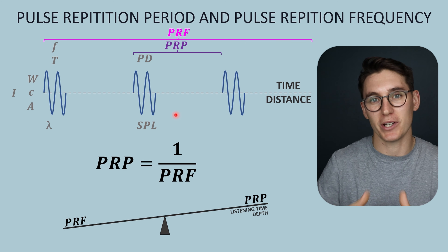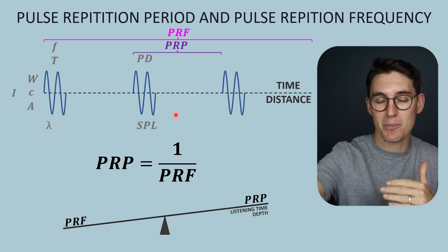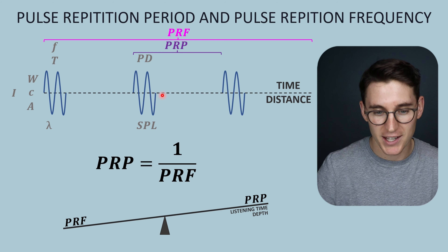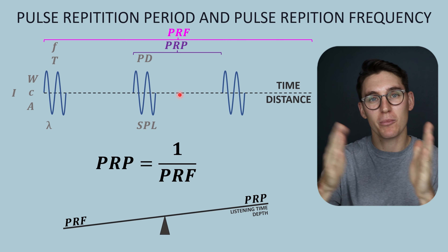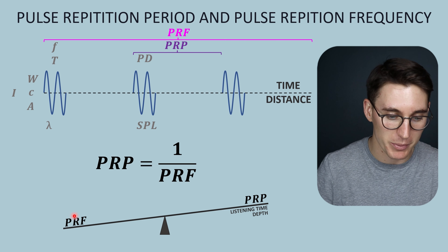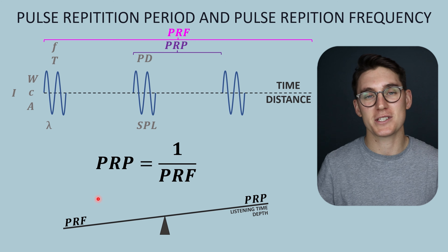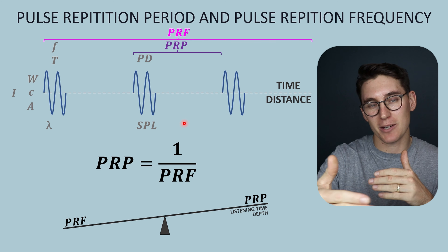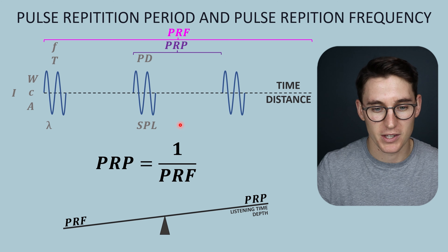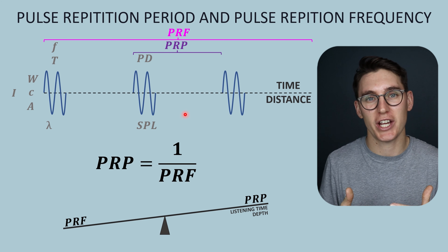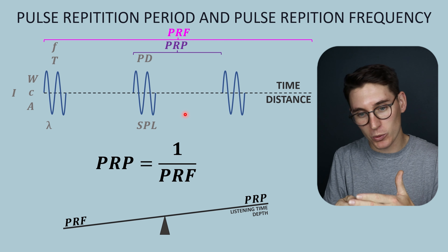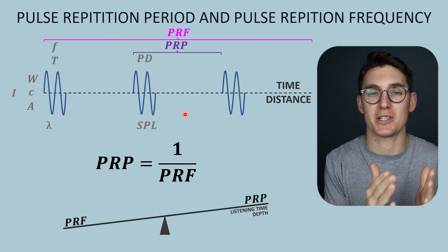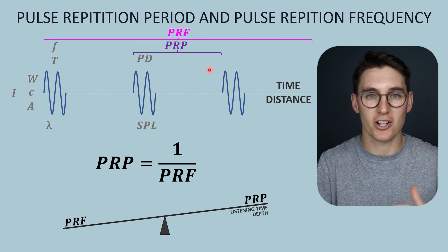Because we're increasing our receive time, we're increasing the depth that we can measure and we are increasing our listening time. Increasing this reduces the number of pulses that we can fit in an individual second — our pulse repetition frequency will be decreasing. And the opposite is true: if we increase the frequency of our pulses, we decrease our listening time and decrease the depth that we can image. So when we change the depth on our ultrasound transducer, we will inadvertently be changing the pulse repetition period and the pulse repetition frequency.